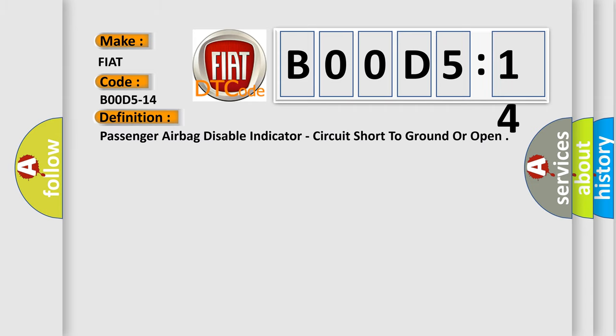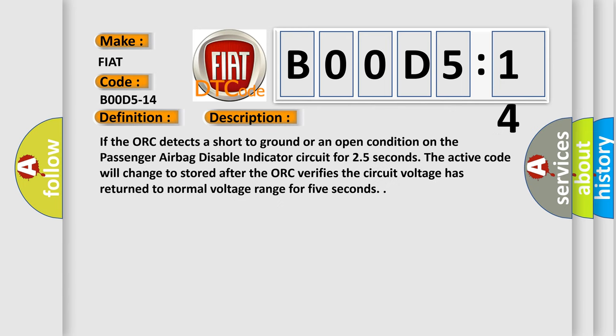The basic definition is: Passenger Airbag Disable Indicator Circuit Short to Ground or Open. If the AUK detects a short to ground or an open condition on the passenger airbag disable indicator circuit for 2.5 seconds, the active code will change to stored after the AUK verifies the circuit voltage has returned to normal voltage range for 5 seconds.